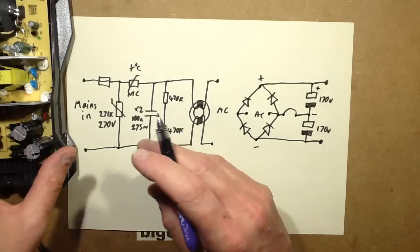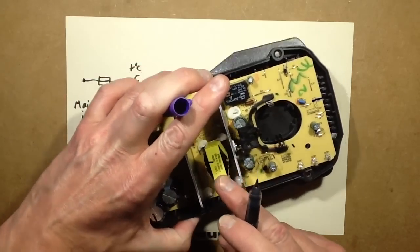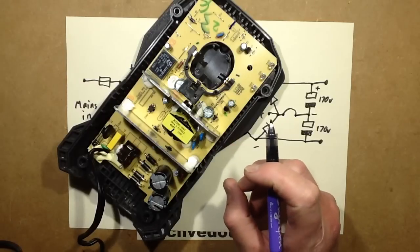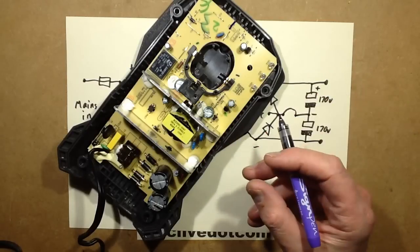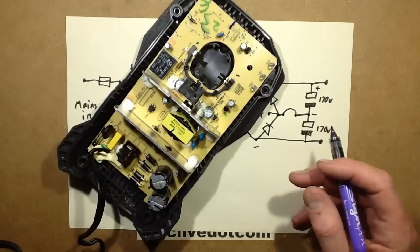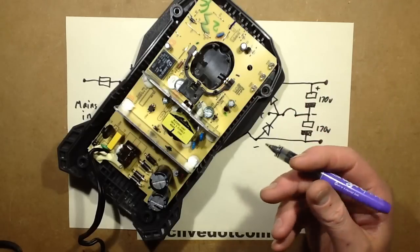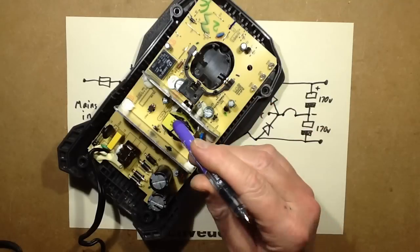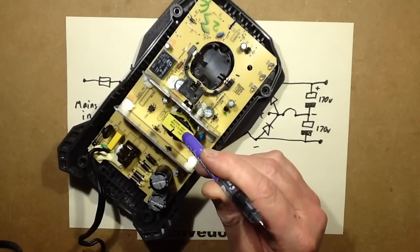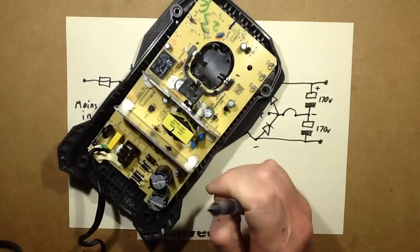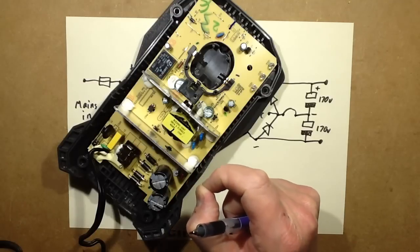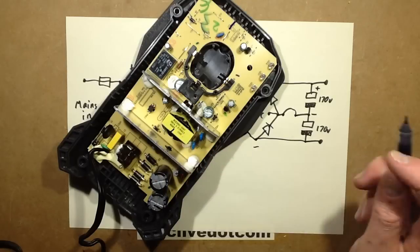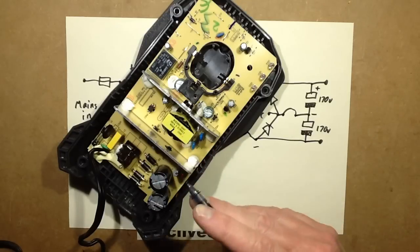And then when the polarity reverses, this is going to be positive and this is going to be negative, and through this diode this is going to be charged to 170 volts too. So you add the two of them up, that comes to 340 volts. Okay, so that's what the switchmode power supply is designed for. It's interesting to note that when you design a switchmode power supply you can get the multi-voltage range ones, like the little LED lamp power supplies that will run from about 90 volts to 250 volts.